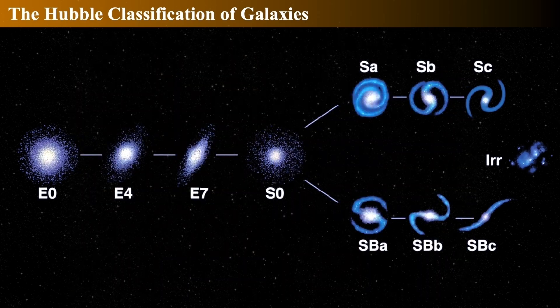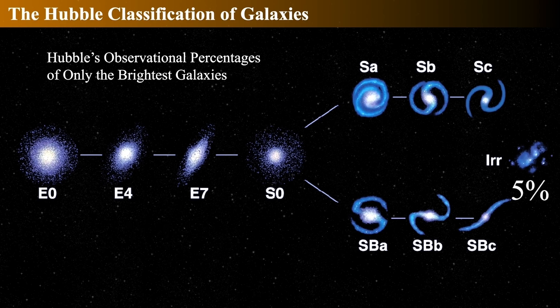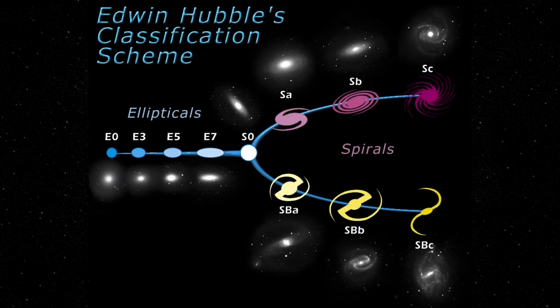Hubble's tuning fork is how he thought the galaxy types had some evolutionary significance — progressing from one step to the other. He found that 75% of all bright galaxies were spirals, about 20% seemed to be ellipticals, and about 5% are irregulars which don't fit any pattern. He thought it progressed from left to right on the diagram — from elliptical to spiral — thinking you go from a simple-looking thing to a more complex-looking thing. But we now know that the Hubble tuning fork diagram has no intrinsic evolutionary meaning.